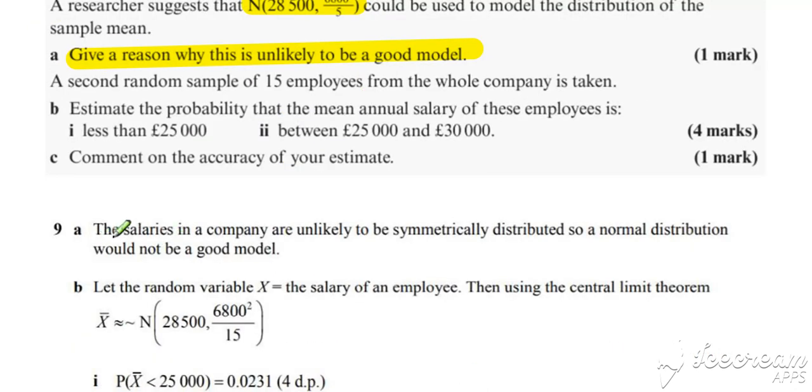So there are two things we could say here. First of all, we could say that the sample size isn't large enough to use the central limit theorem, because the sample size is only five. So a normal would not be a good approximation.